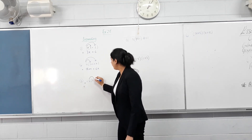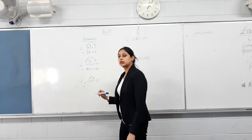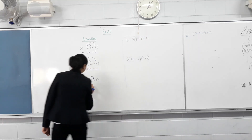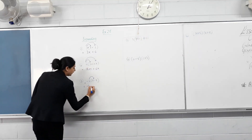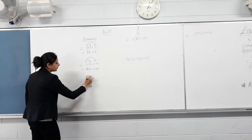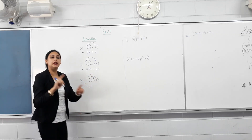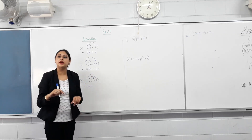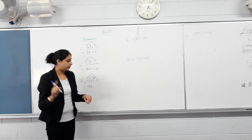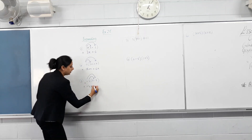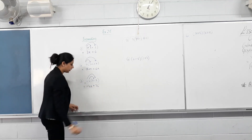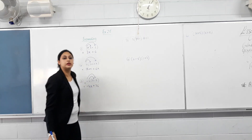Next one. Negative four times x — negative four x. And then negative four times negative nine. When two negative numbers multiply together, the answer is positive. So negative four times negative nine? Plus 36. So you have to be careful of the sign.